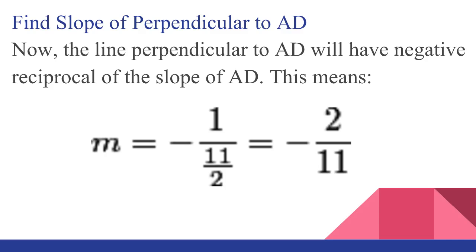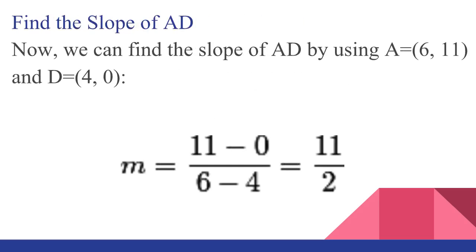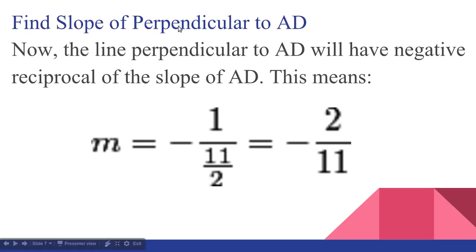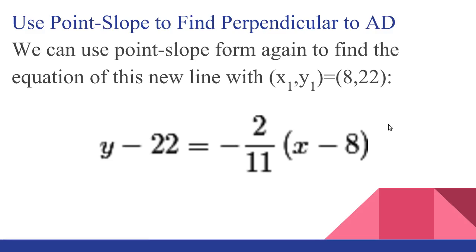And then if you go back to the original problem, we wanted to find the line perpendicular to line AD through E. So to find the slope of that line, we take the negative reciprocal of the slope of AD because it's perpendicular. So we get negative 1 over 11 halves, which is negative 2 elevenths. And then we use point-slope form again because we know that M is negative 2 elevenths. And then for X1, Y1, we use E, which is (8,22) because we know that the line goes through E. So we get Y minus 22 equals negative 2 elevenths, X minus 8.